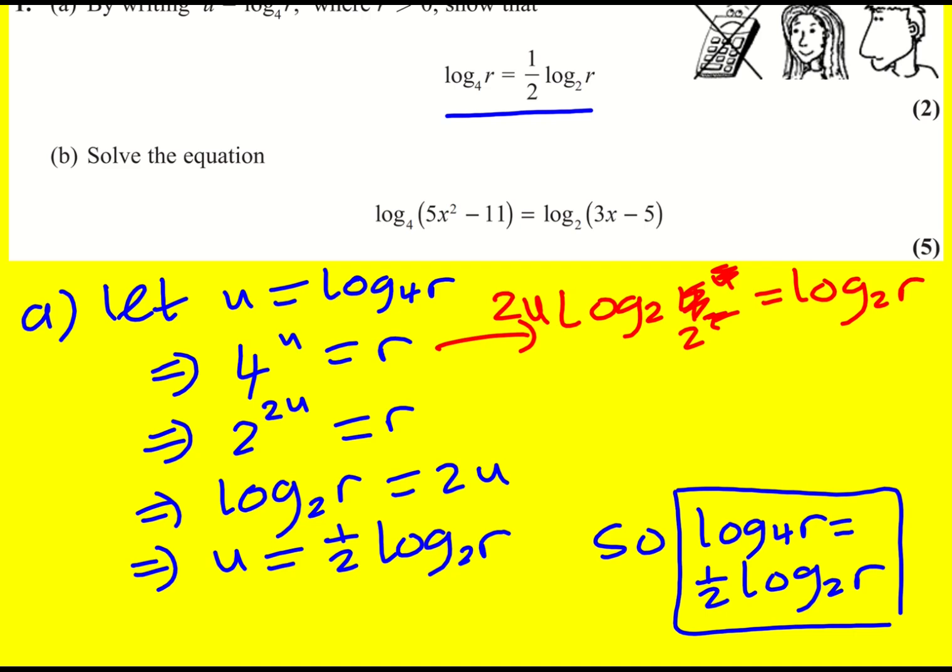Bring the 2 down. And log to base 2 of 2 is just 1 or to be fair you could just do log to base 2 of 4 is 2. And then you're going to get u as half log to base 2 of r from that. So yeah that one works as well but this is how I did it.